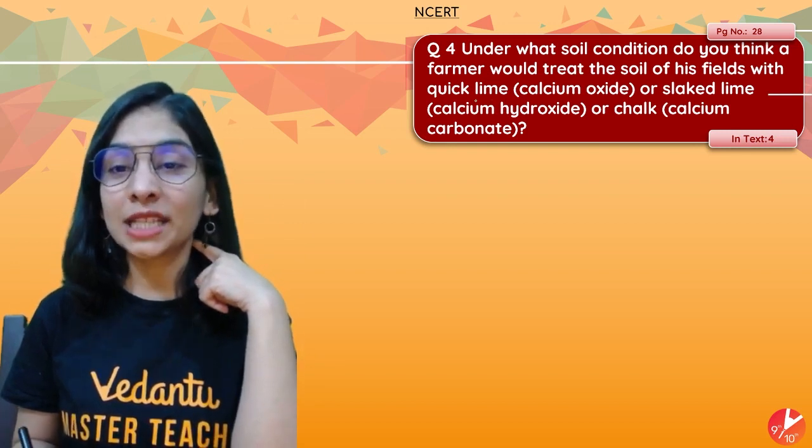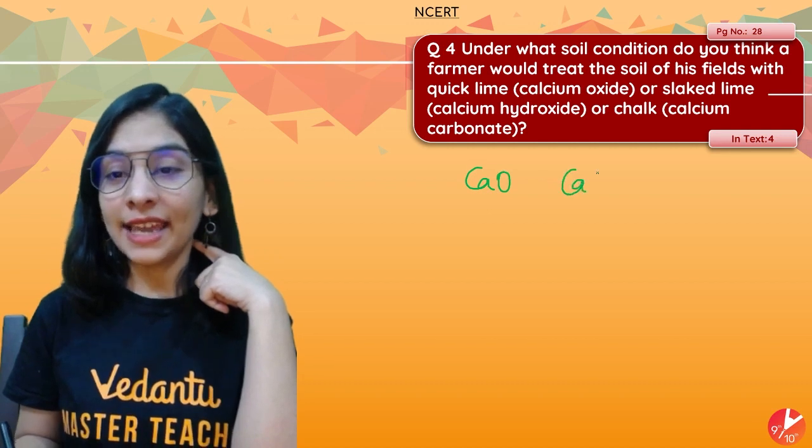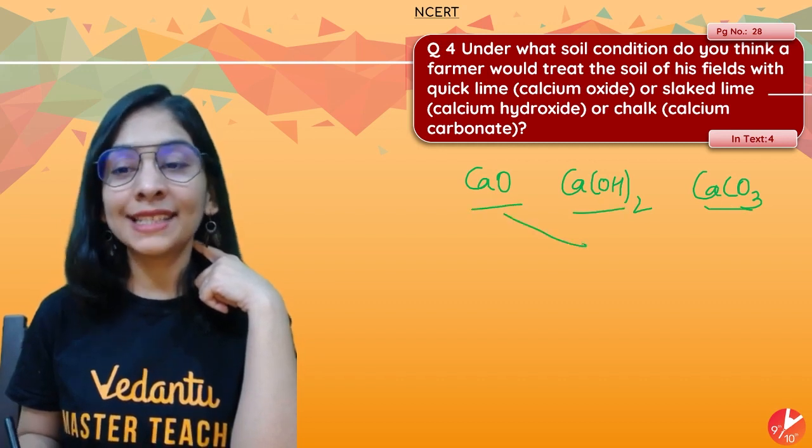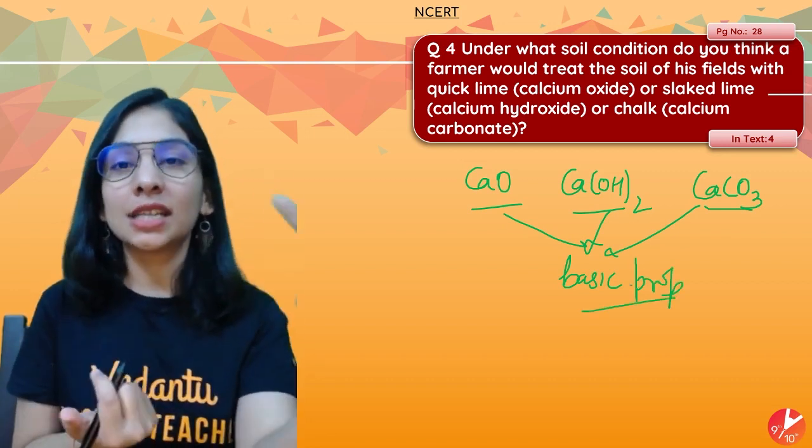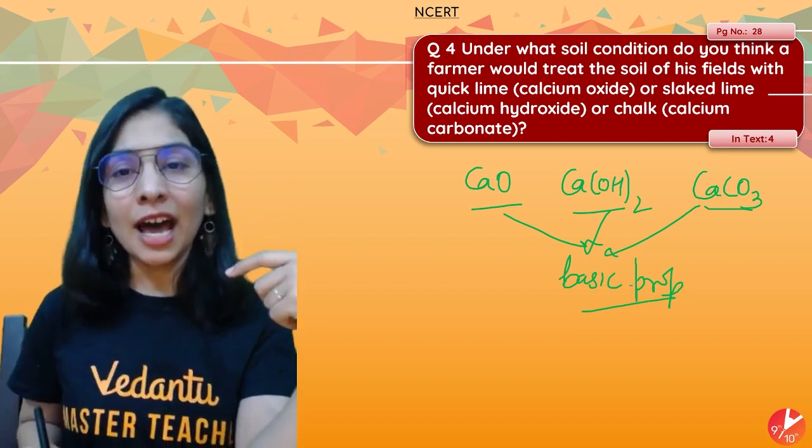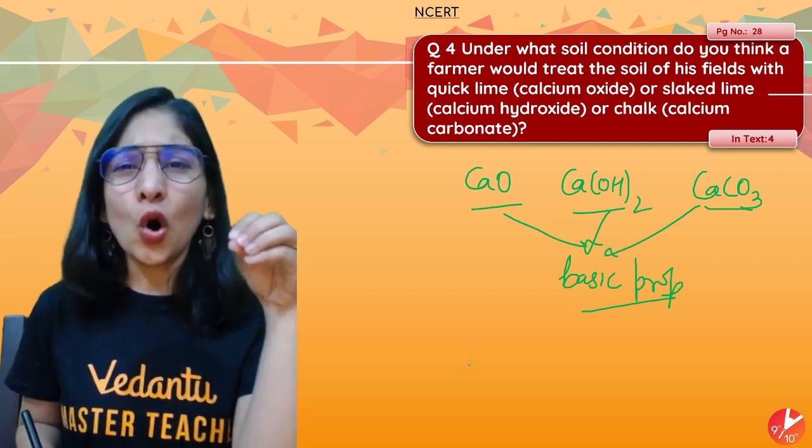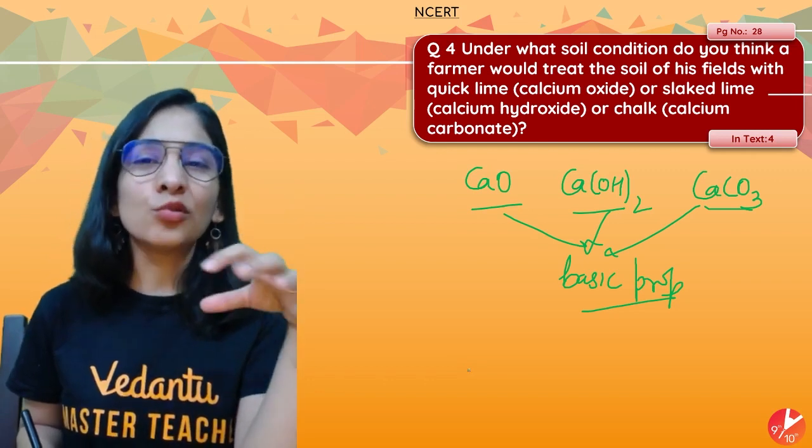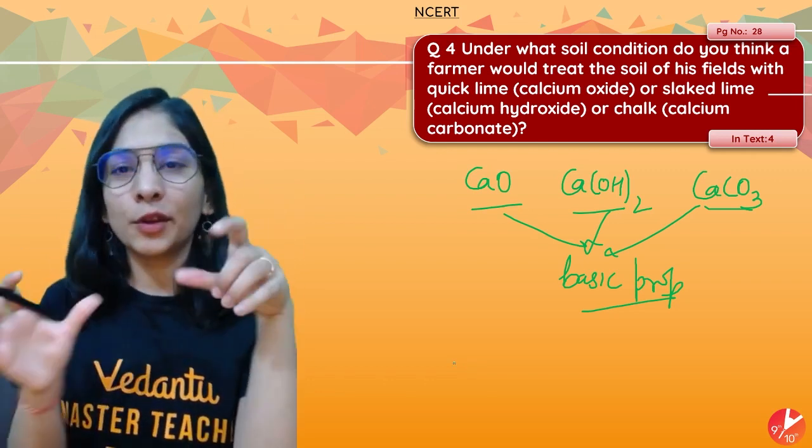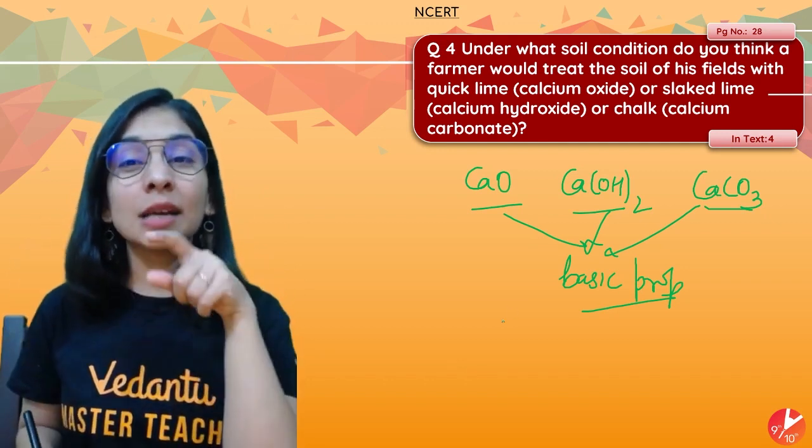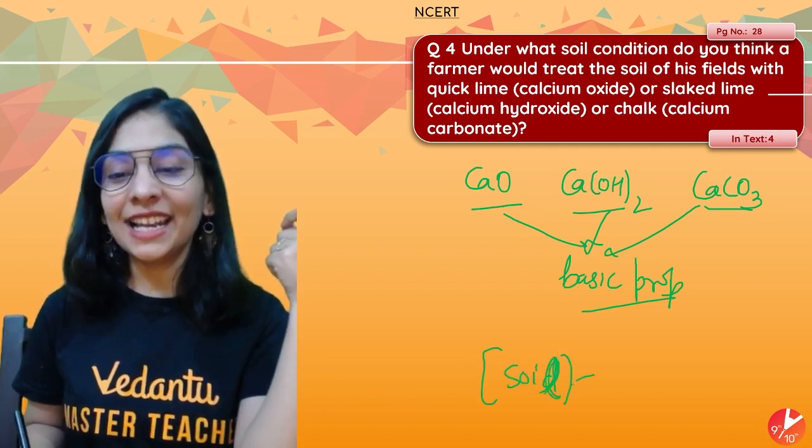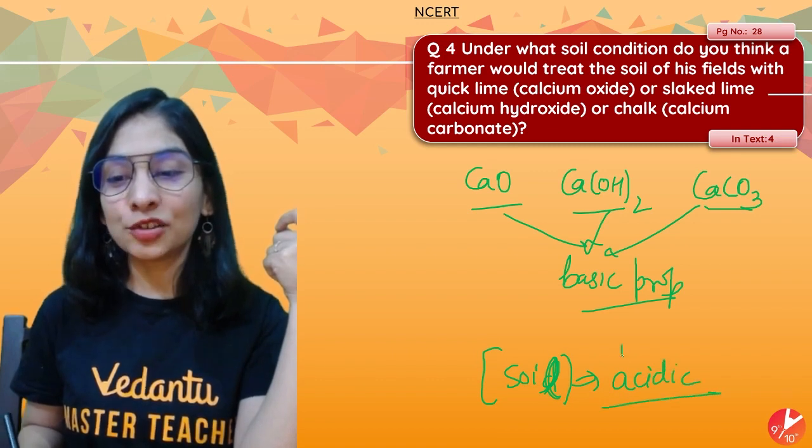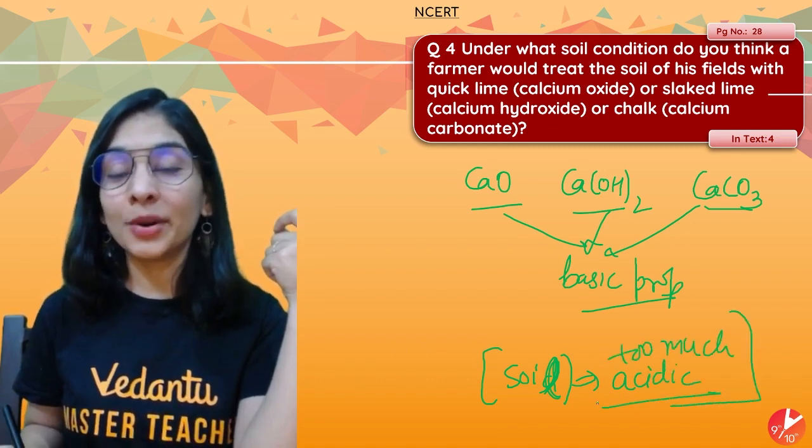Next question: Under what soil condition do you think a farmer would treat the soil of his fields with quick lime (calcium oxide), slaked lime (calcium hydroxide), and chalk (calcium carbonate)? Why would he treat it? All these substances carry basic property because metal oxides, metal carbonates, and metal hydroxides generally carry basic property. Generally, the plants and crops we grow are planted in almost neutral solution, around 6.8 to 7.2 or 7.4, values close to 7. If it needs to be treated with these basic substances, the reason might be that the soil has become very acidic.